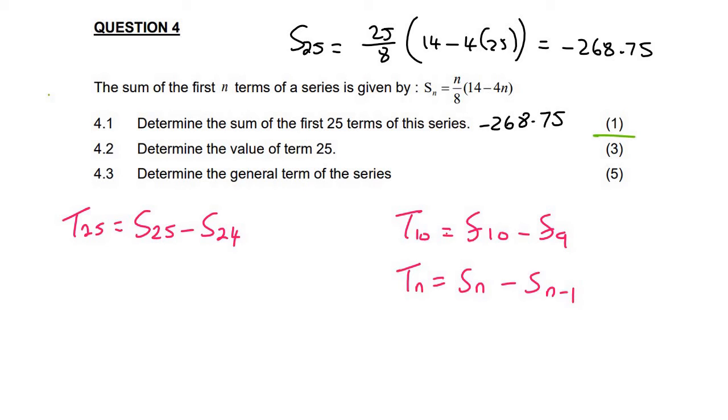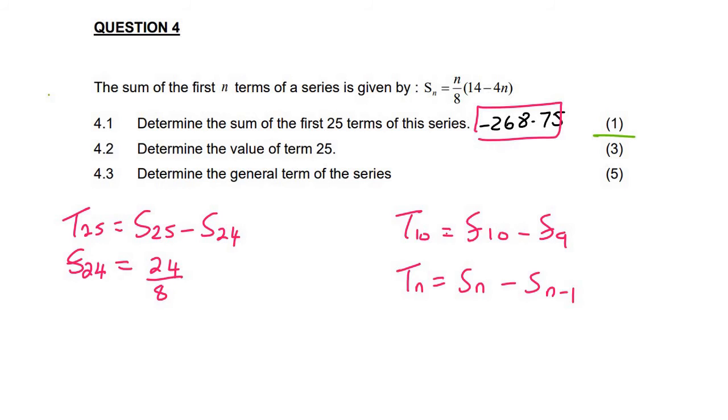So we've already worked out the sum of 25. It was this one here. So let's quickly go work out the sum of 24 terms. And so you just plug in 24 into this formula over here. And so that's going to give us 24 over 8. And then 14 minus 4 times 24. And so that would give us minus 246.